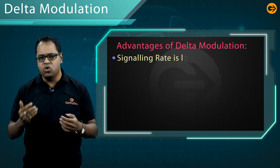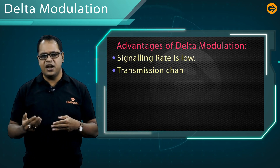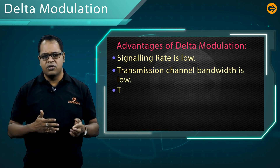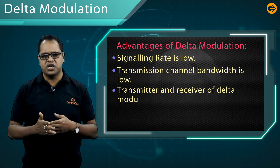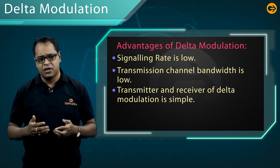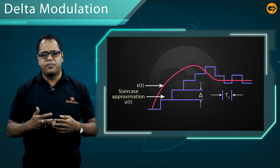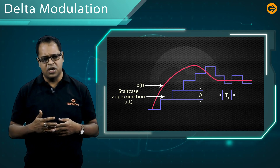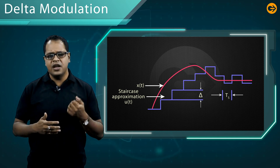The advantages of delta modulation are: the signaling rate is low, the transmission channel bandwidth is also low, and the transmitter and receiver of delta modulation are simple.